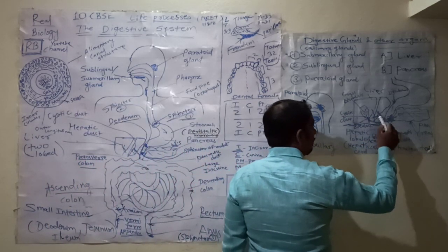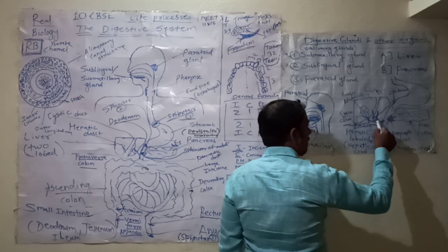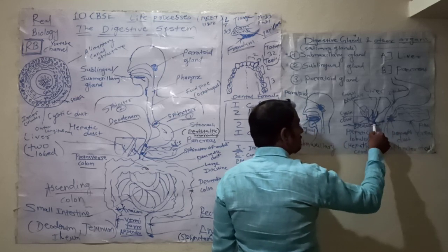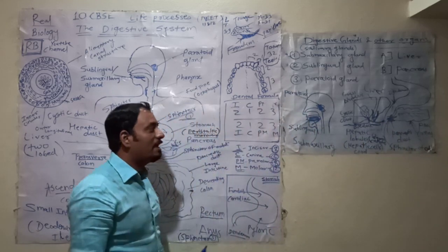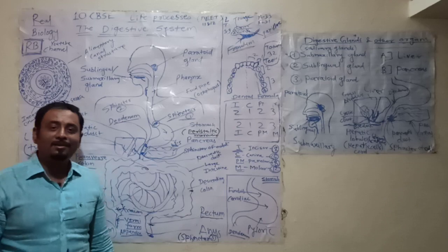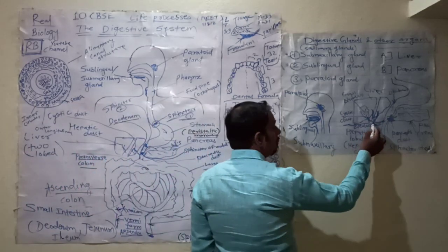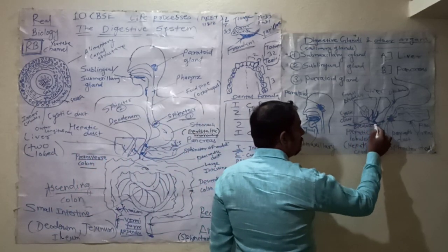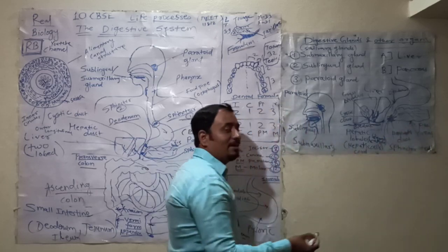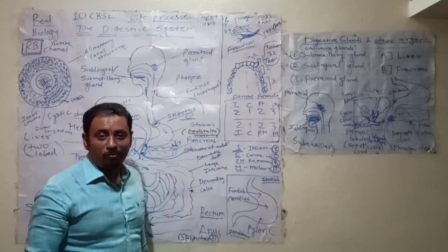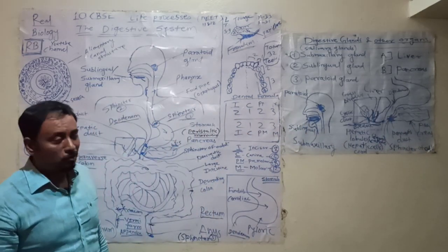The other side of the lobe has hepatic ducts. These two combine with the gallbladder duct and form a common duct. Along with this, the pancreas also secretes pancreatic juice along with hormones such as insulin and glucagon.